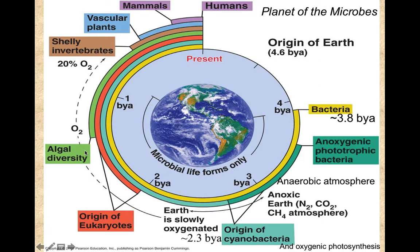Photosynthetic eukaryotes — the algae — also appeared, and oxygen continued accumulating until we reach about 21% in our present atmosphere. Humans evolved almost like a second before midnight in this great clock of the origin of life — we're real newcomers here on Earth. We're going to spend most of our lecture time talking about bacteria, which have survived through all these major changes on Earth.